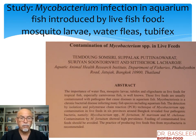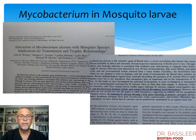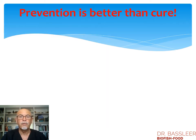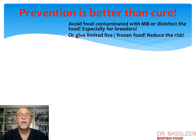A study important for us to know where mycobacterium is coming from: infection in aquariums can be introduced by live fish food. A study done in Thailand showed that mosquito larvae, water fleas, and tubifex are suppliers or introducers of mycobacterium to our fish. Also a study in Cameroon found mycobacterium marinum commonly in mosquito larvae in the wild. So it's coming from nature, it's coming from fish food. Think about prevention — avoid food contaminated with mycobacterium, especially important when you're a breeder. You can buy food raised in mycobacterium-free conditions, or disinfect it by cooking or heating.